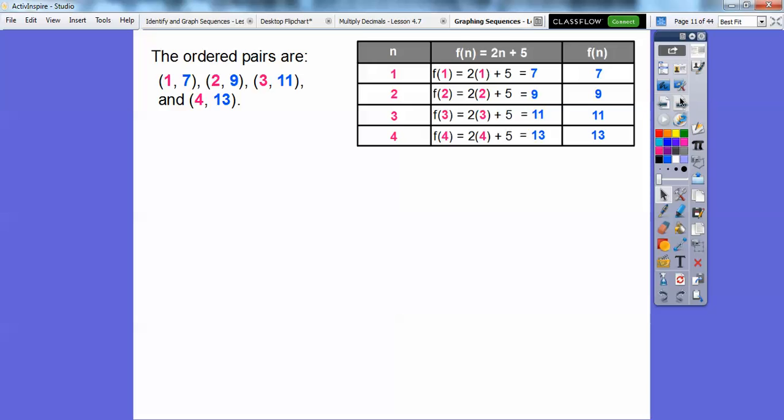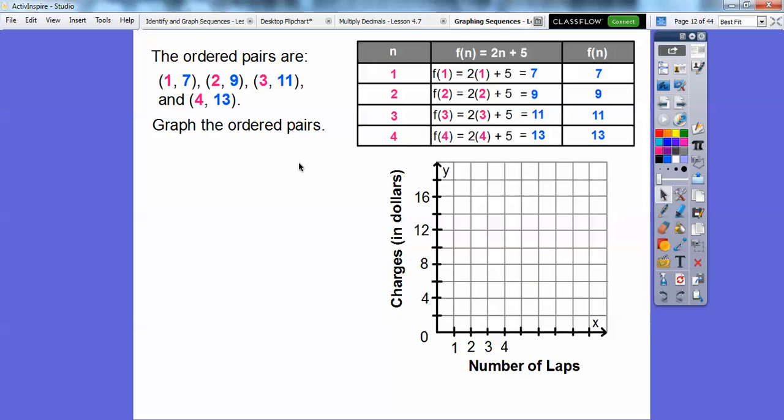So then we're going to graph these. Remember, these are our x's. So when we do an x graph, we're going to go over 1 and up to 7. So it looks like these are going by 2s, 4s. So here's 6, here's 7 right here. So we'll put a dot right here for 1, 7. And then we'll just keep going. And then here's 2, 9. So it's between the 8 and the 10 because they're going by 2. So here's 2, 9. Here's 3, 11. And here's 4, 13.